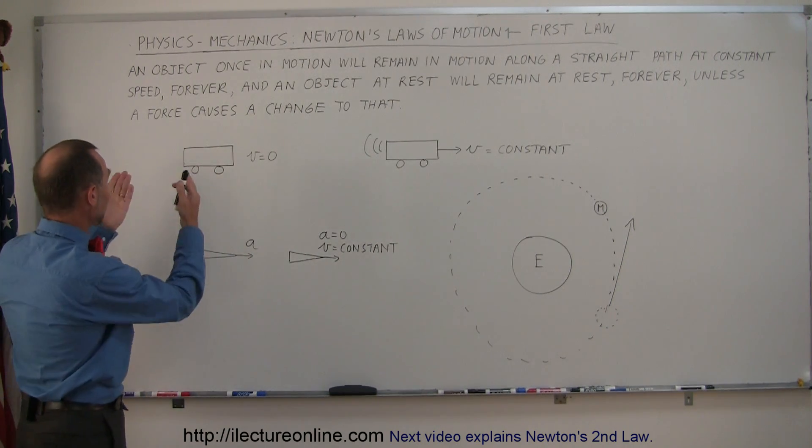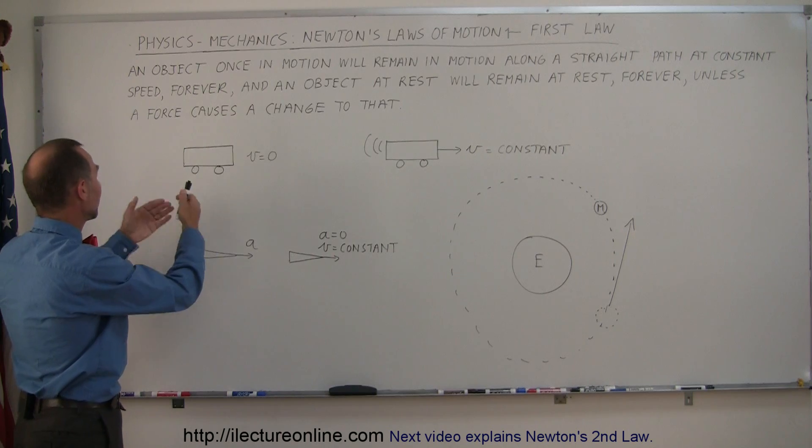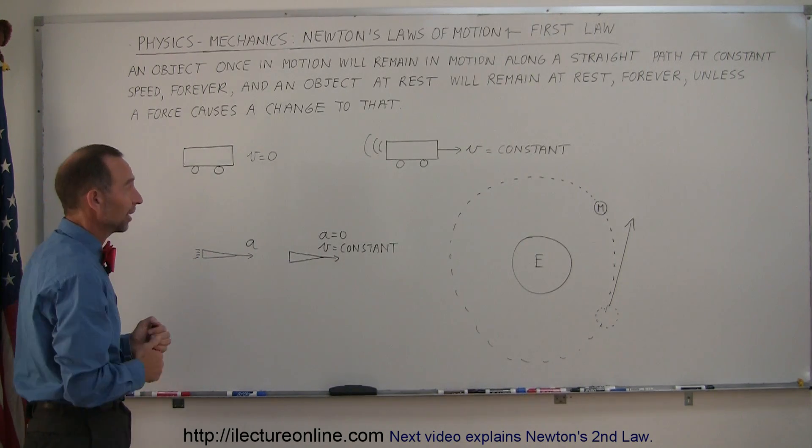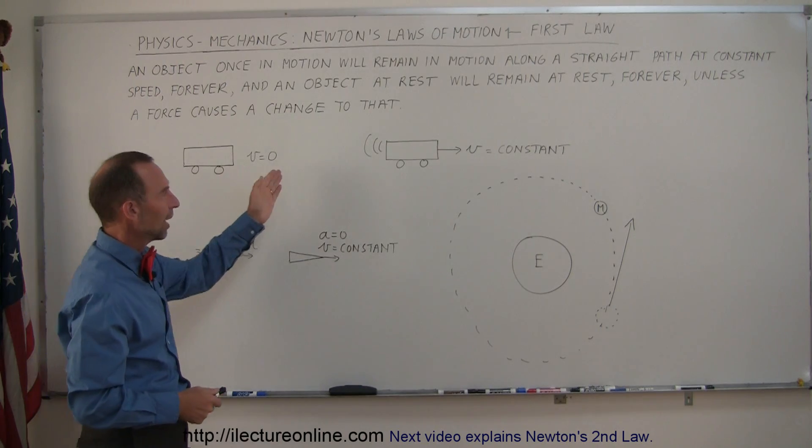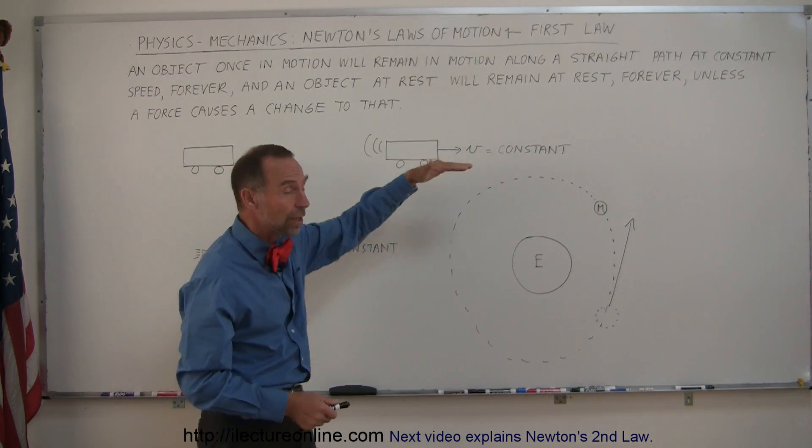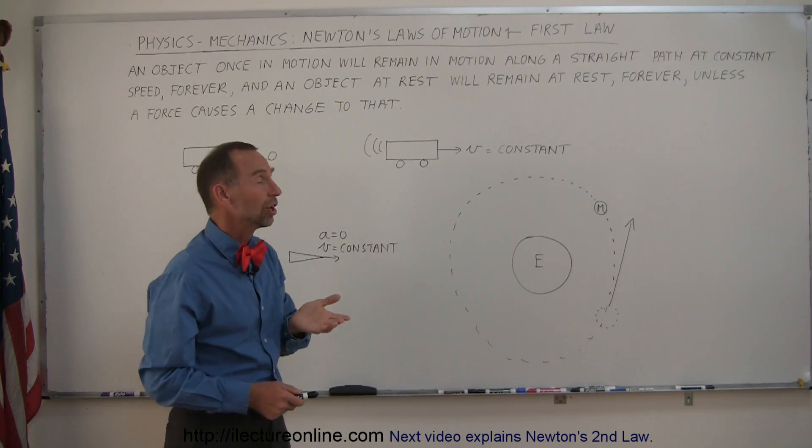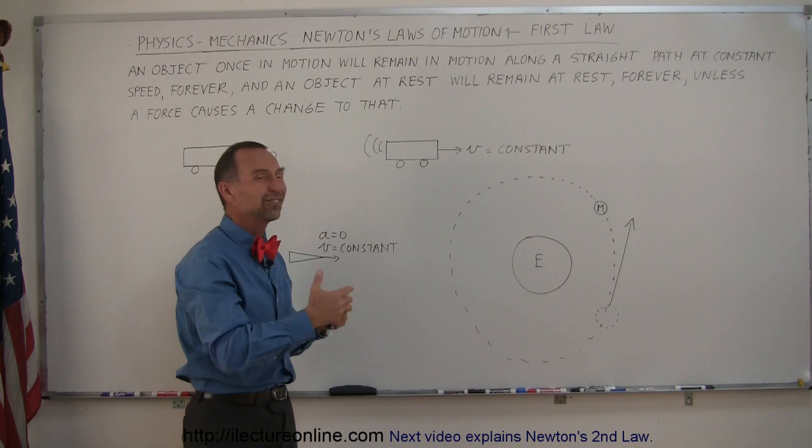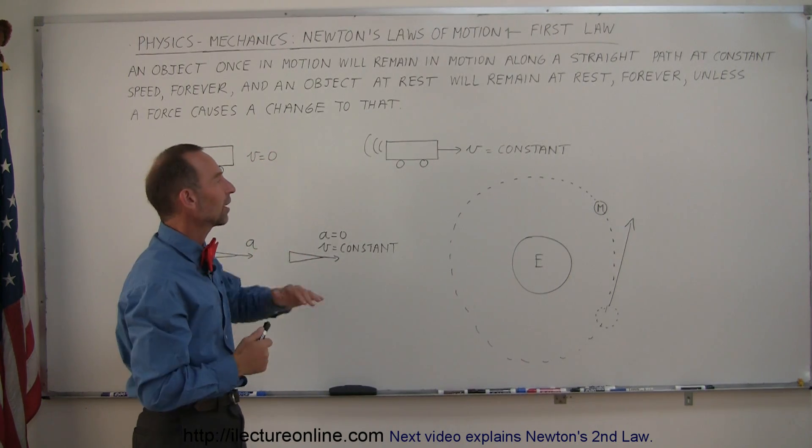As a simple example, if you have a cart with no velocity, it will sit there forever—come back in a hundred years, it's still there. If a cart is moving at constant velocity, it will continue unless some force changes that. Of course, in normal life, there's friction and wind resistance.